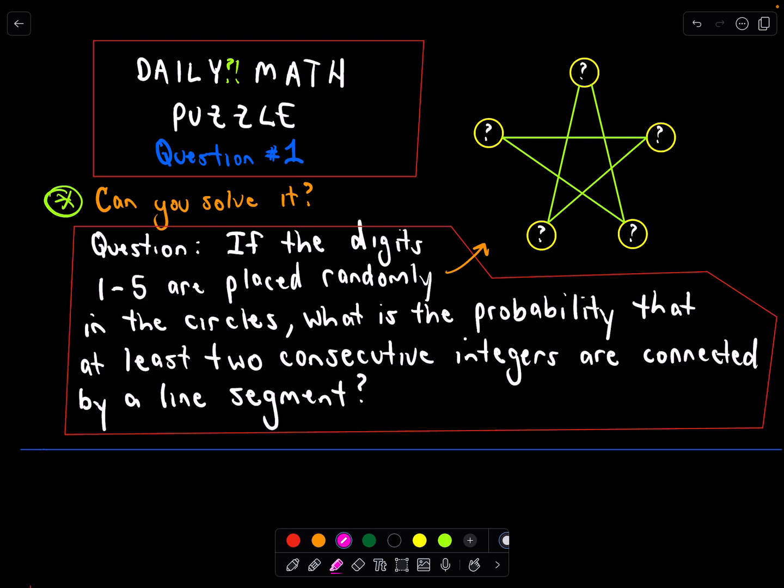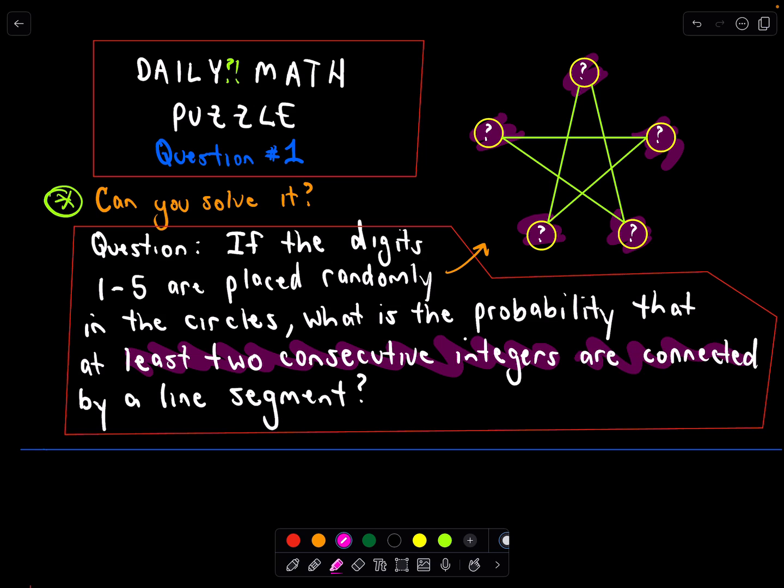So here's our question. The idea is we're going to take the digits 1 through 5 and place those digits randomly in those circles, in that little star diagram. If we place those digits randomly in that circle, what's the probability that at least two consecutive integers are connected by a line segment? That is the question.